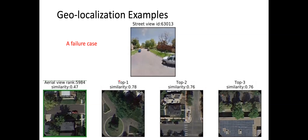We also show a failure case. For this example, the ground truth is ranked at 5,984 — not in the top five or top ten — and the similarity is very low at 0.47. So this is a failure case.